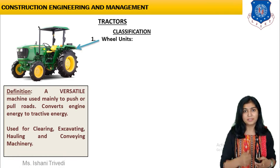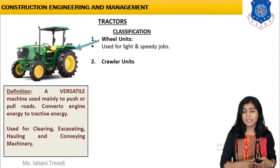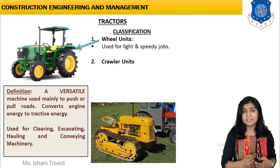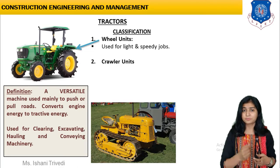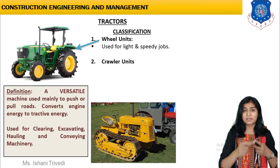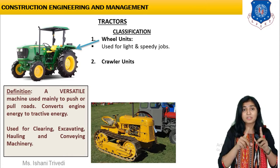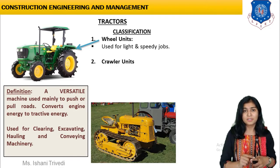Next, we are going to classify the tractor into two types. The first classification is wheel mounted tractor — the wheel units. You can see in the image that the wheels are mounted below the operating cabin. The second classification is crawler mounted tractor. Instead of wheels, we have a crawler which is made up of sharp steel blades at the bottom — there are no wheels. If you replace the tires or wheels with a crawler, then this becomes your crawler unit, that is, your crawler mounted tractor.